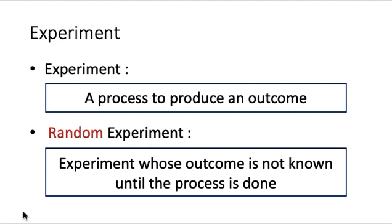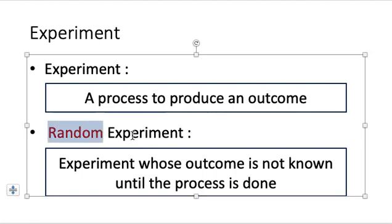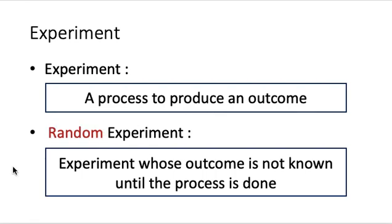So what is an experiment? An experiment in math is a process to produce an outcome. And in particular, in this course, we are interested in random experiments. A random experiment is an experiment such that the outcome is not known until the process is done.